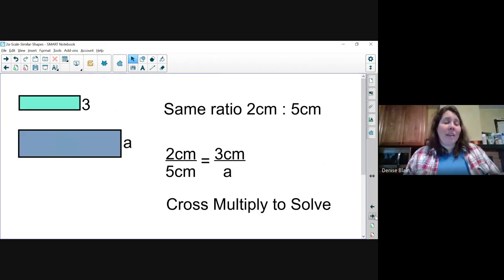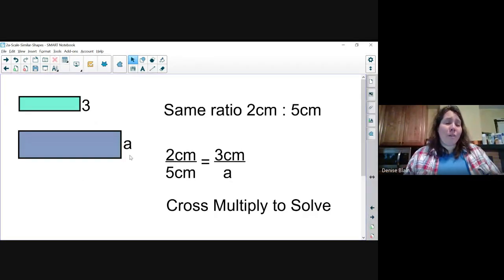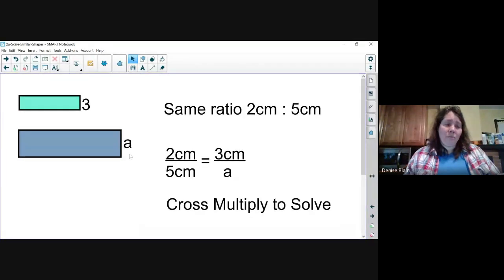Two rectangles. We're going to use the same ratio to find the missing measurement of the larger rectangle. Set up a proportion where the smaller rectangle number is on top, the larger rectangle number is on the bottom. We cross multiply to solve.